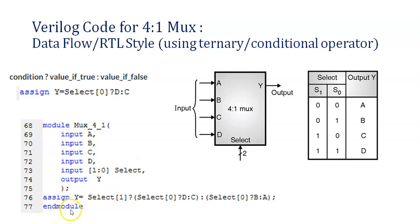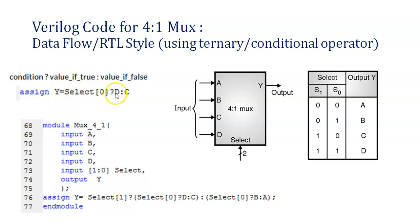The endmodule keyword comes by default at the end. In between, you need to write the functionality. At this point there is no relationship between A, B, C, D, select, and Y — you need to specify that functionality. In dataflow, you use the keyword assign. So assign Y equals — using the ternary operator: if the condition is true, D will be assigned to Y; if false, C will be assigned to Y. The question mark and colon are essential — before the colon is the true option, after the colon is the false option.